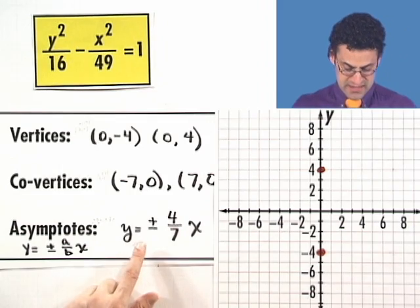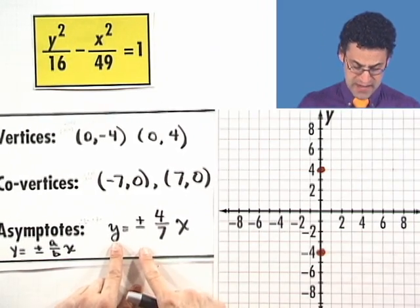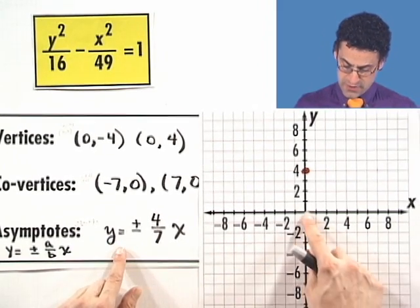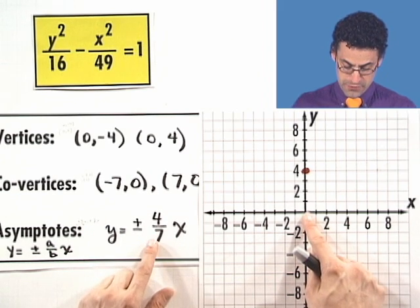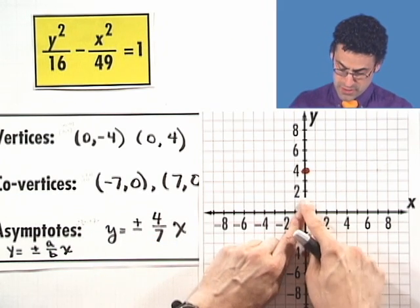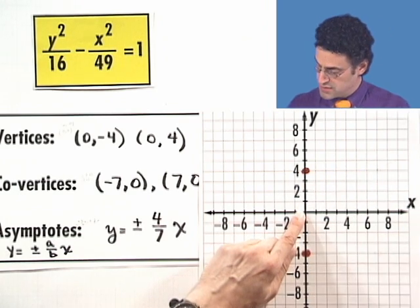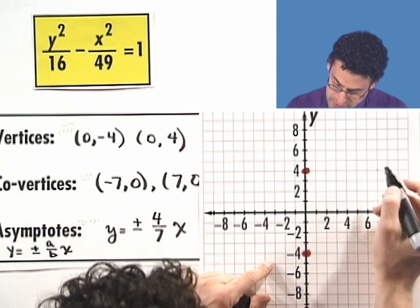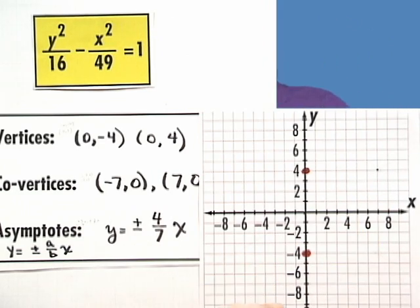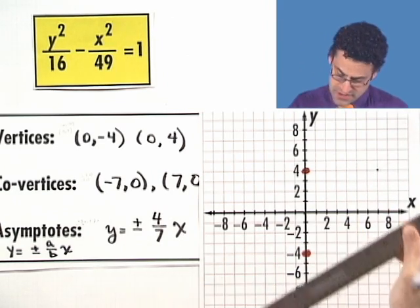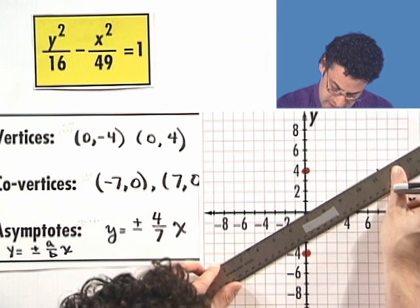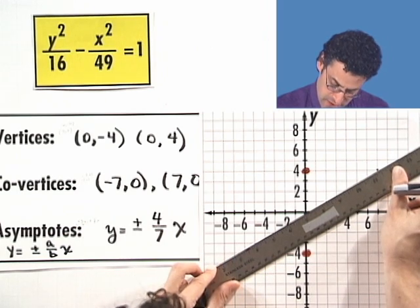And then what I can do is I can just now draw these asymptotes in. These are straight lines. They start at the origin. And one has slope 4/7. So I go up 4, 1, 2, 3, 4, over 7, 1, 2, 3, 4, 5, 6, 7. So one asymptote is going to sort of go right through this point and this point, take a straight edge. Having a straight edge actually for these questions is not a bad idea since these do get a little bit involved.